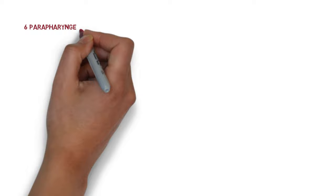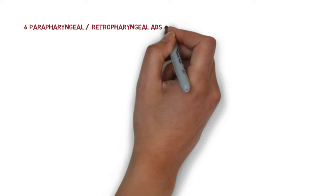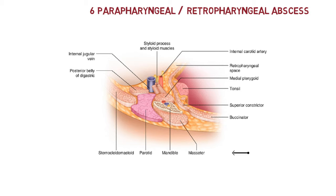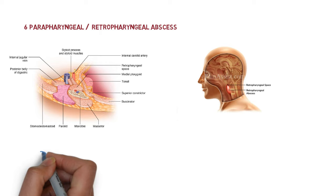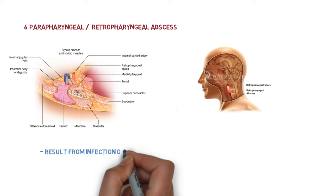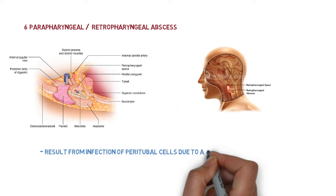The last one is parapharyngeal or retropharyngeal abscess. A parapharyngeal abscess is a deep neck space abscess of the parapharyngeal space, which is lateral to the superior pharyngeal constrictor muscle and medial to the masseter muscle. The space is divided by the styloid process into anterior and posterior compartments. This abscess results from infection of the peritubular cells due to acute coalescent mastoiditis.